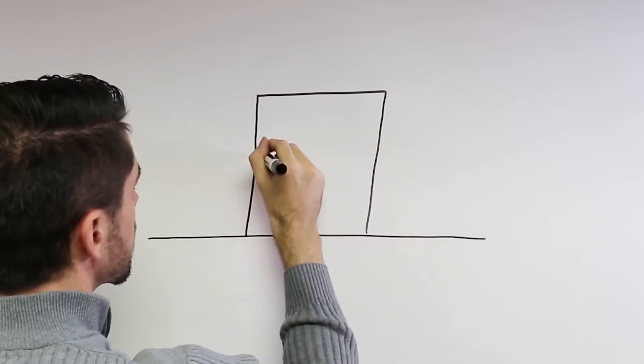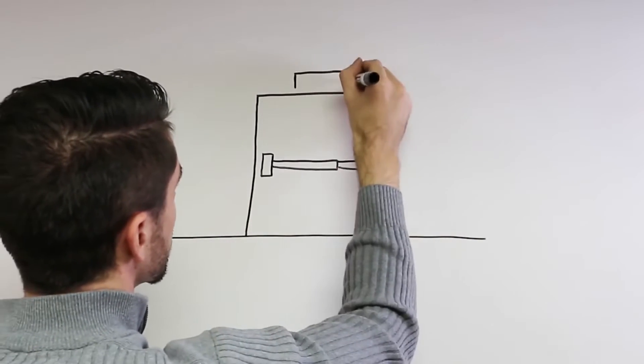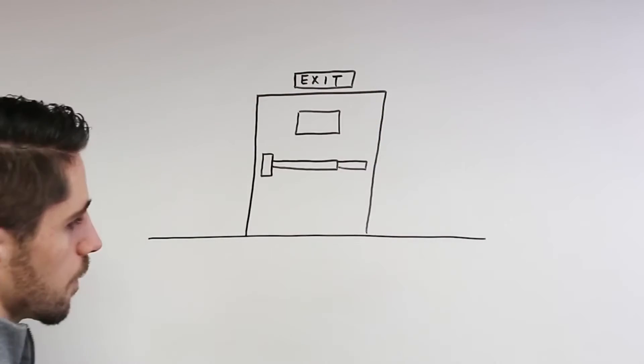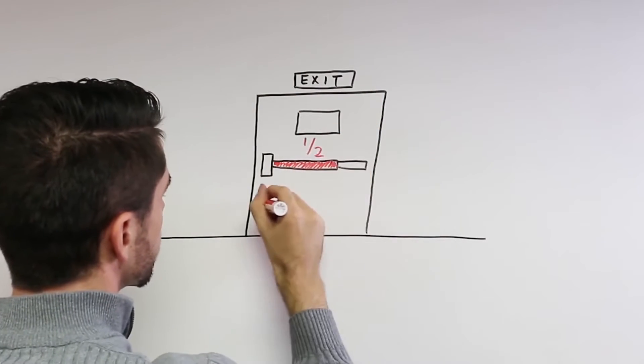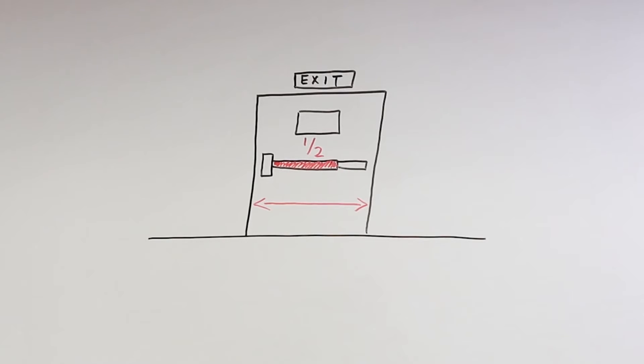When codes require exit hardware, the actuating portion of the device must be at least half the width of the door leaf. That's so when a person or persons are exiting in a hurry, it is easy for them to find the device.